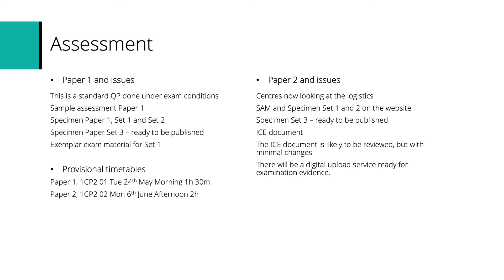The provisional timetables for summer 2022 are already on the website — there's a link in this presentation. Paper one is Tuesday the 24th of May in the morning, one and a half hours. Paper two is Monday the 6th of June in the afternoon. In terms of paper two and the issues surrounding it, it's worth having a good look at the ICE document — there's a link here and we're going to quickly zip through it.